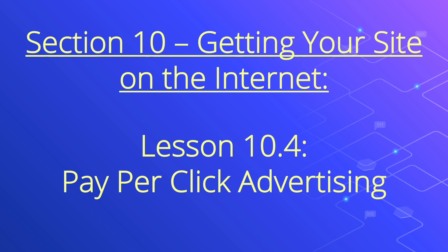You then write a few words of copy for your ad — for example, "Thousands of black widgets on sale." Your ad will appear on the right of the search engine results in Google. You can also pay a premium and have your ads appear at the top of the page, inside a colored background.